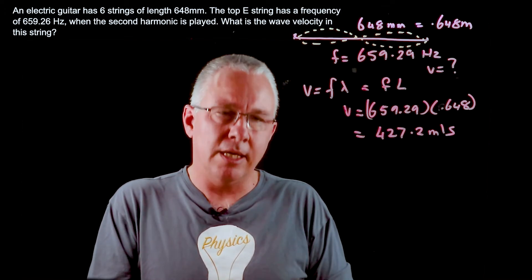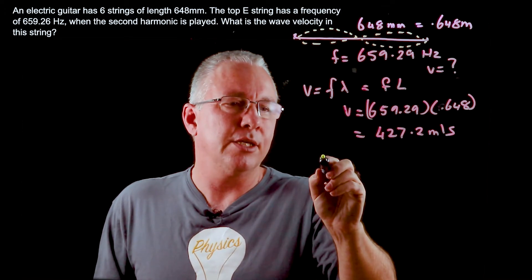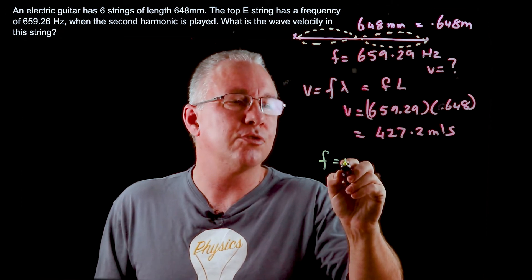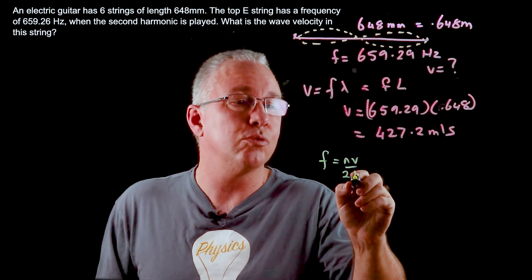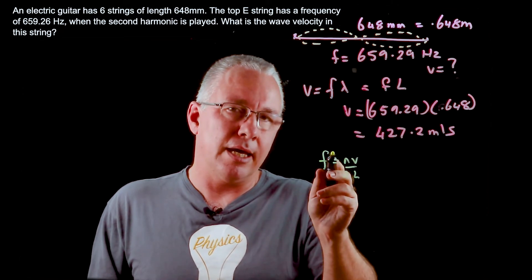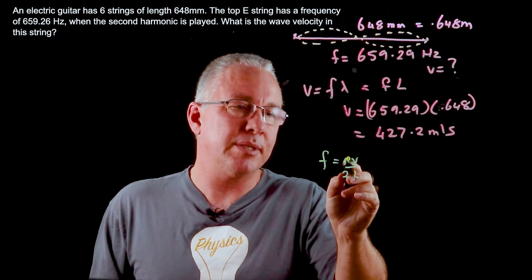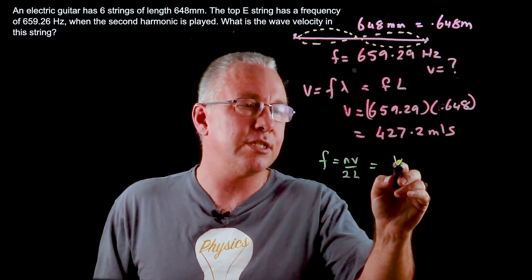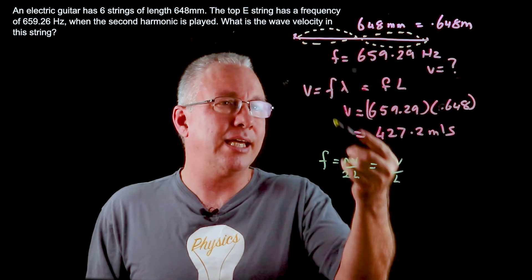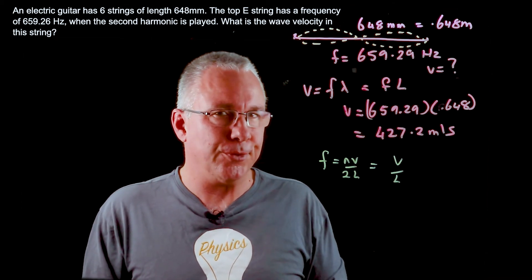If you know the formula, I'll show you that's the same thing. We know that f equals nv over 2L. If I have this as my second harmonic, this becomes 2, so you have v over L, and again what we have is what we've just had before.